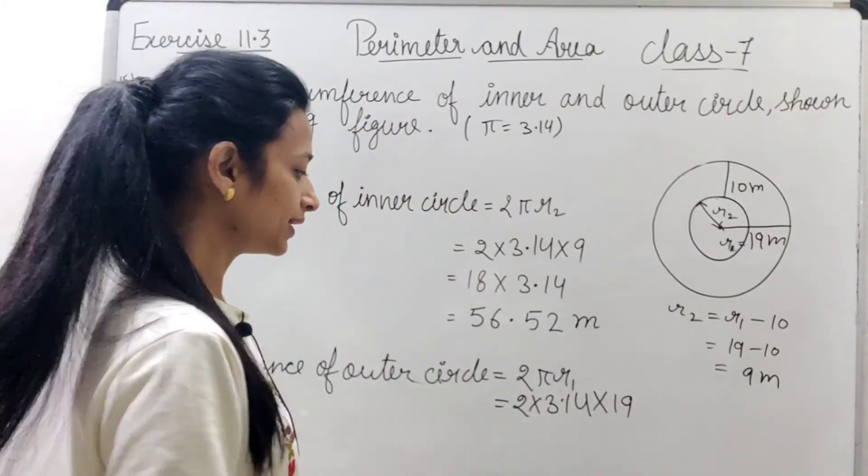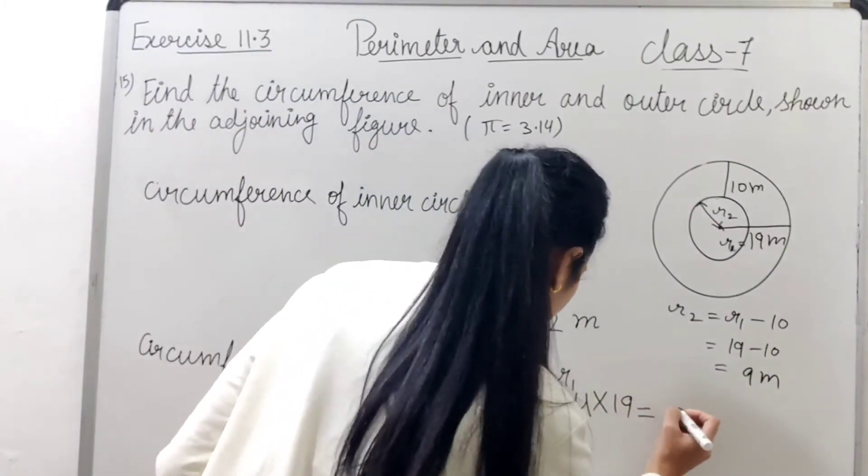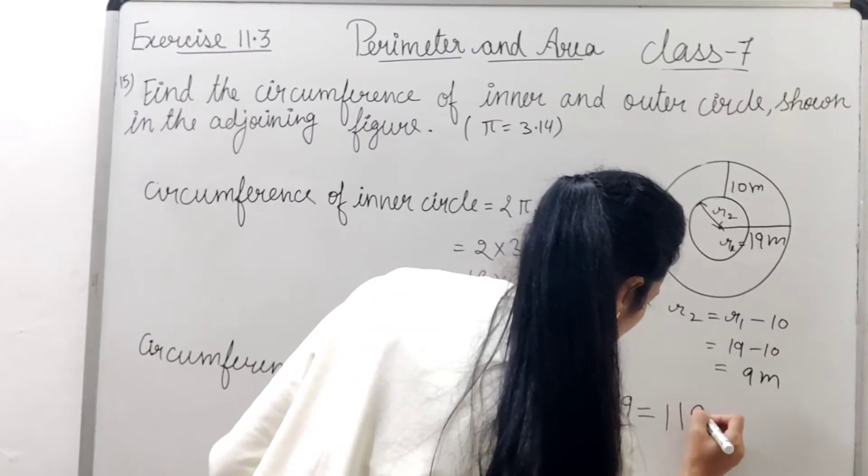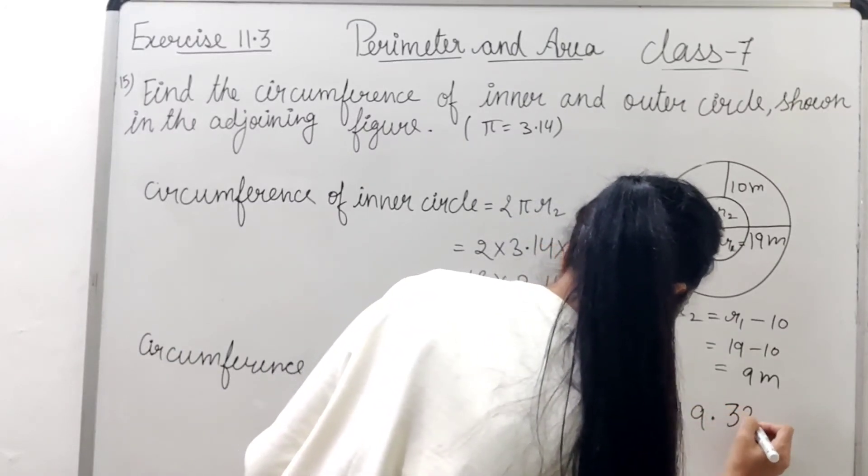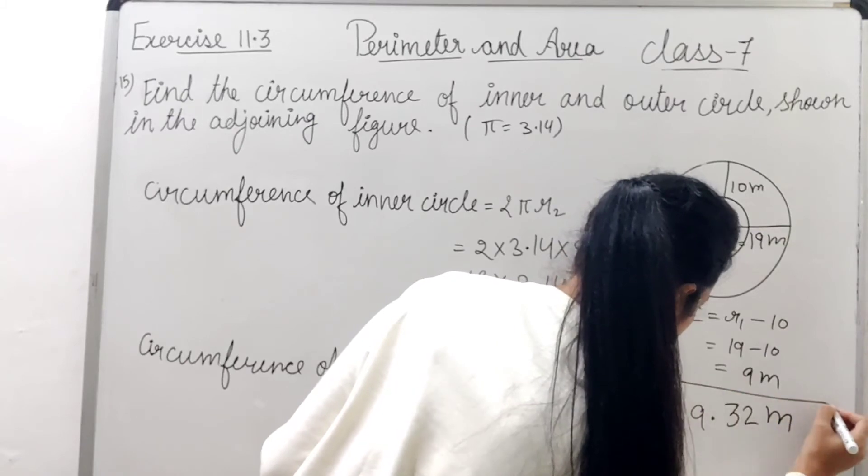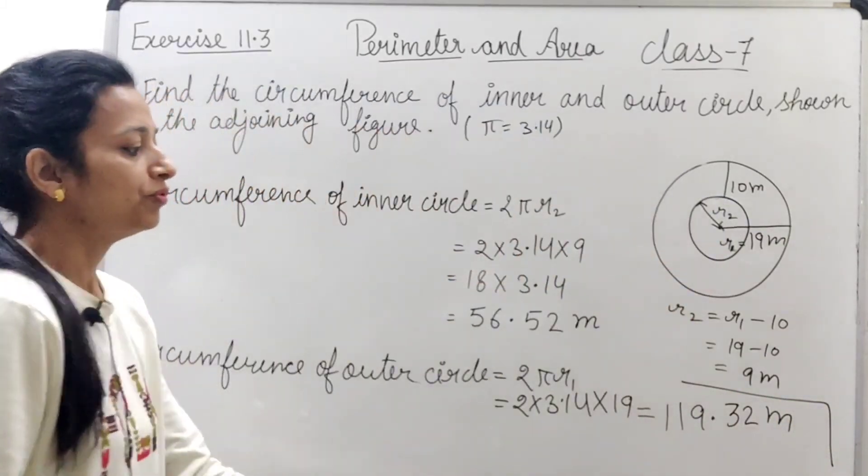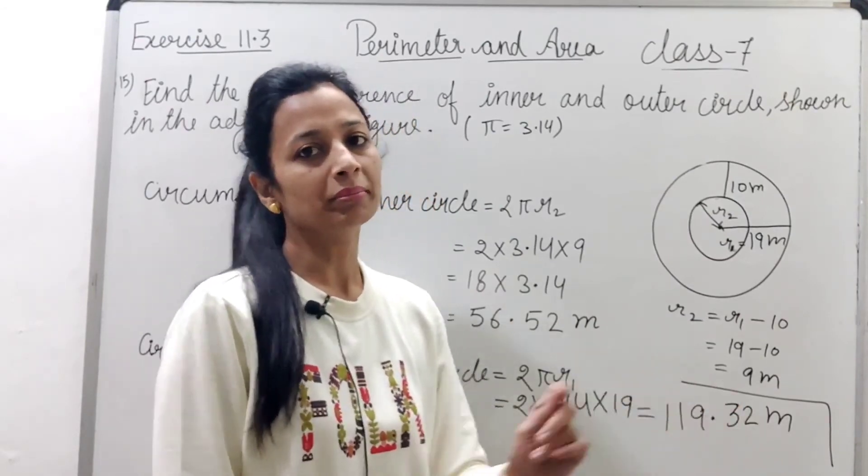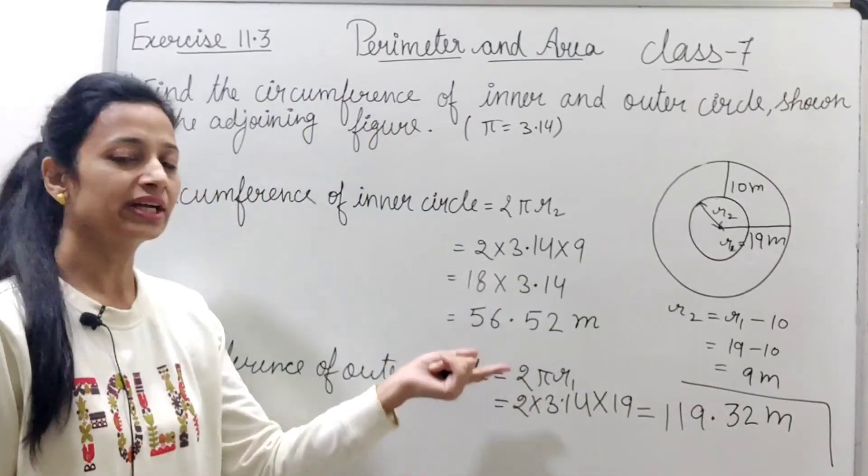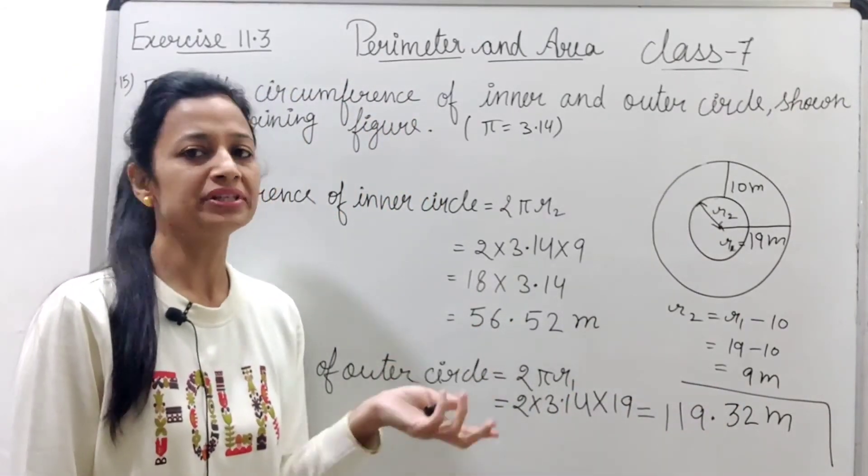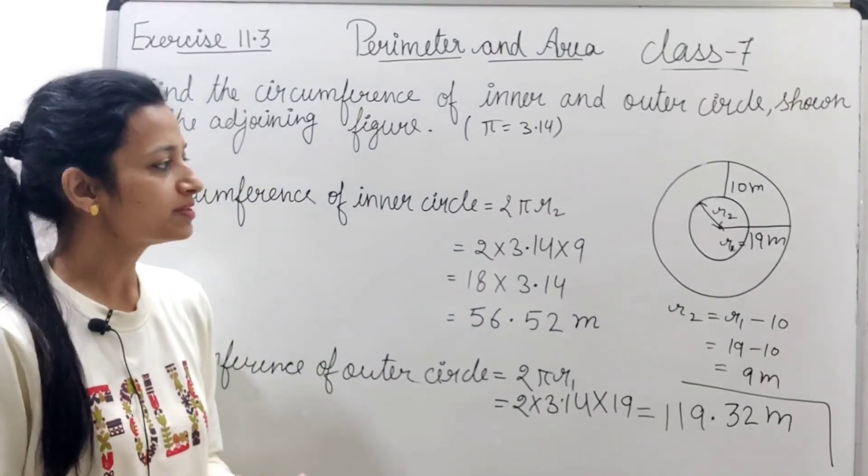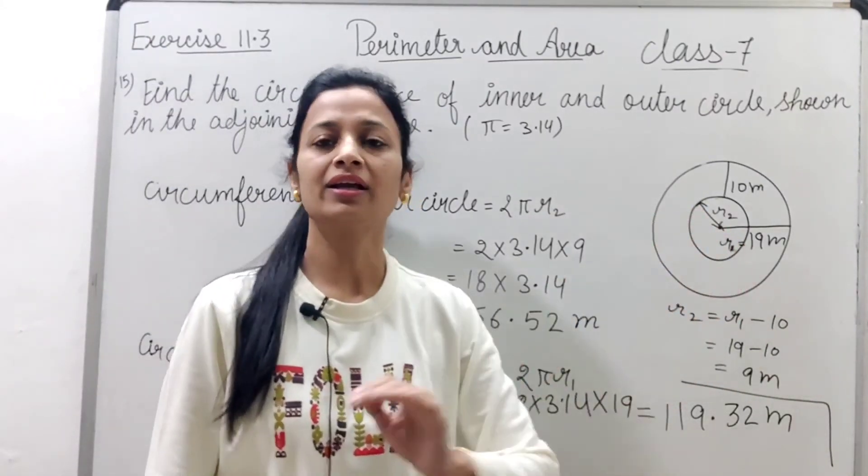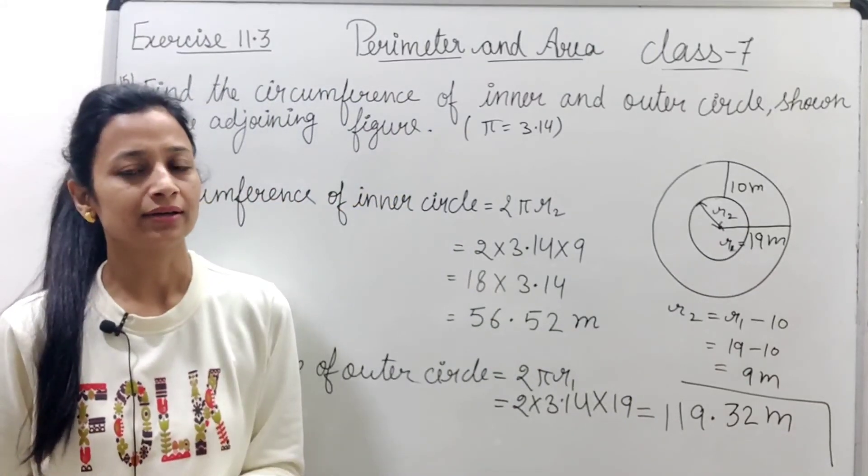इसको calculate करेंगे then we will get 119.32 meters. Okay, तो दोनों circles की हमें क्या मिल गई? Circumference जो हमसे पूछा गया था. The main point इस में यही था कि हमें कैसे inner circle की radius को find करना है.